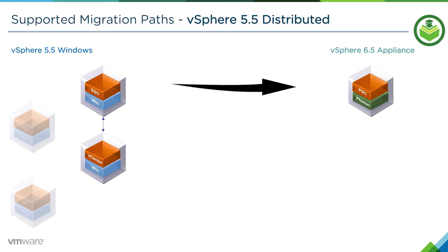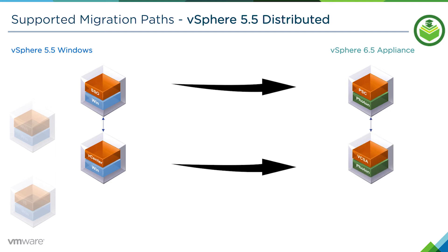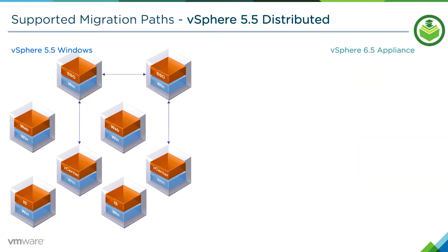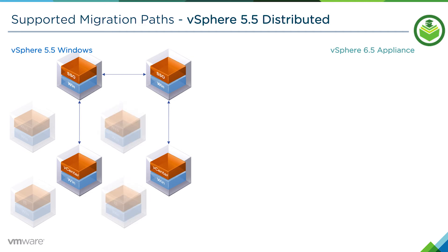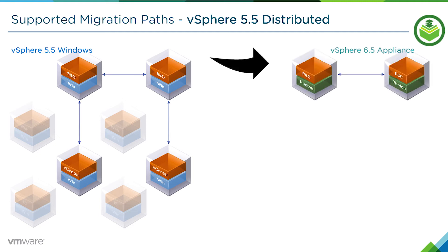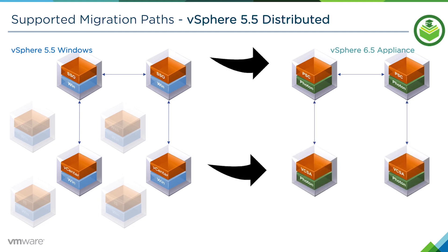We would migrate the SSO machine first to become our new PSE appliance 6.5, and once that's complete, migrate the vCenter to be a vCenter Server Appliance 6.5. Scaling that out where we've got two of each, we would again forget about the web client and inventory service, migrate both SSOs first to become our new PSEs, and then migrate the vCenter servers. The biggest takeaway is to focus on your SSO machines first, then your vCenter Server machines. Once migrations of your SSO and vCenter are complete, you can safely power off the inventory service and web client machines and decommission them from your environment.